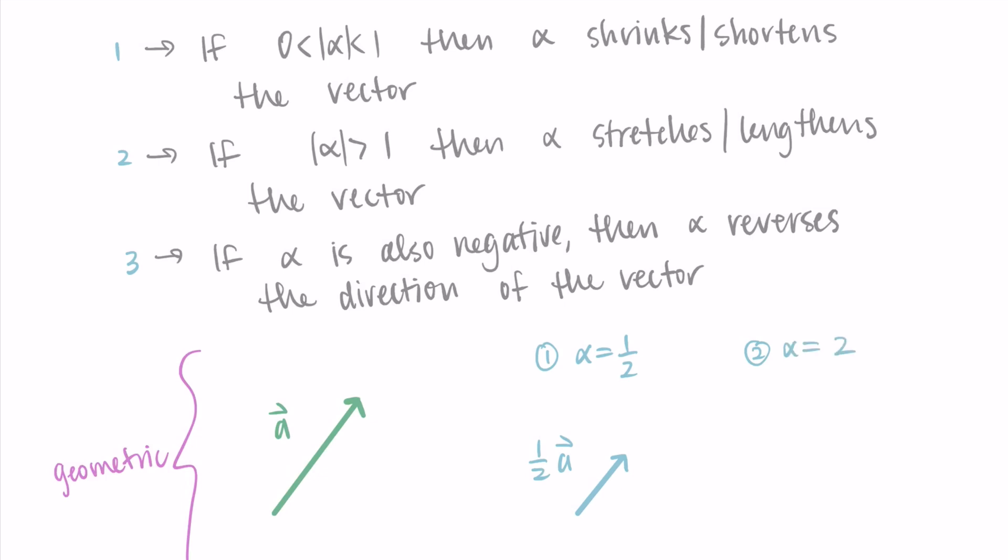For the second case, let's consider when alpha would be two. So two times the vector a is going to stretch the vector by two. Each of the components gets multiplied by two. And so the vector is twice the length.